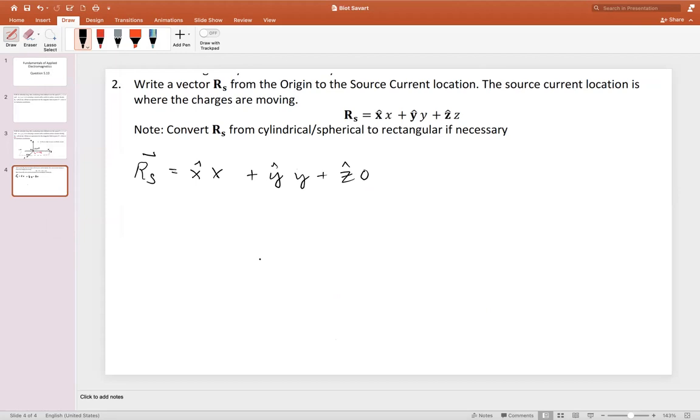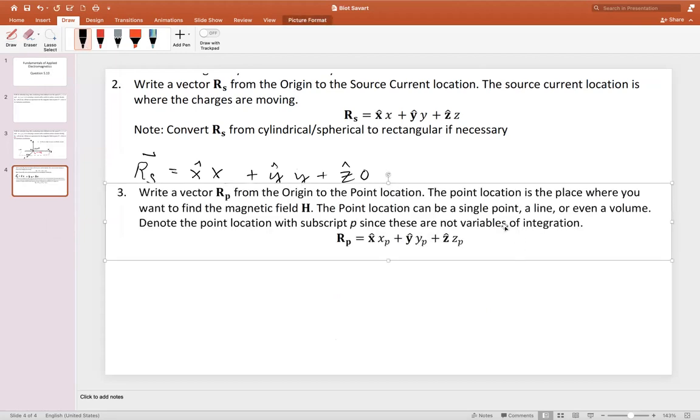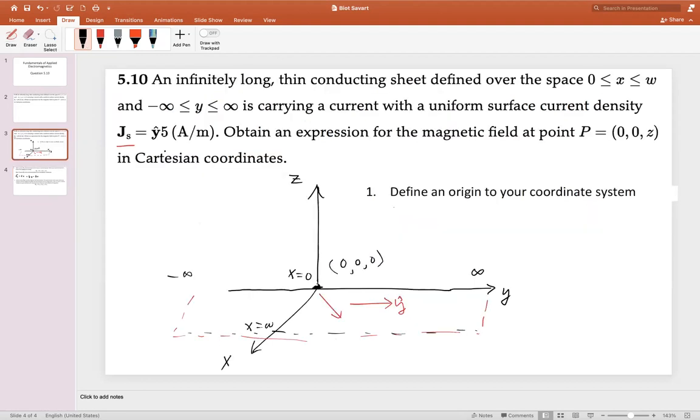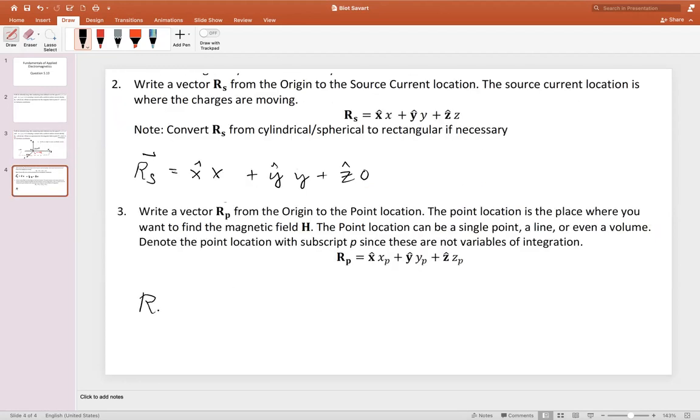Now let's write a vector Rp. This goes from the origin to the point location. The point location will be the location where we are interested in finding that field. In the problem statement, we are told we want to find the field at (0,0,Z). So let's write this vector Rp. In the X direction, if we want to go from the origin to the point of interest, we have nothing in the X or the Y. But in the Z direction, we do have a direction. So we want to go to Zp and we will leave it as Zp in order to remind ourselves that we do not want to integrate using this Zp variable.